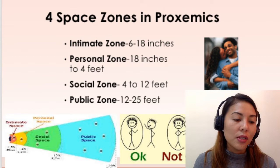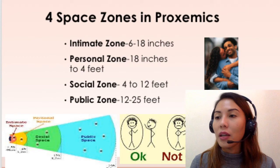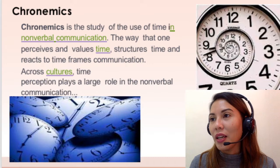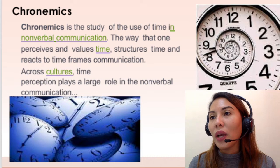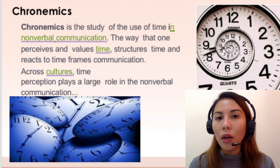So again, when we talk of proxemics — the language of space — the four space zones are intimate, personal, social, and public zone. Next is chronemics, which refers to the language of time — the study of the use of time in nonverbal communication. The way that one perceives and values time, structures time, and reacts to time frames communication. You are either monochromatic or polychromatic, or whether you use time formally or informally.